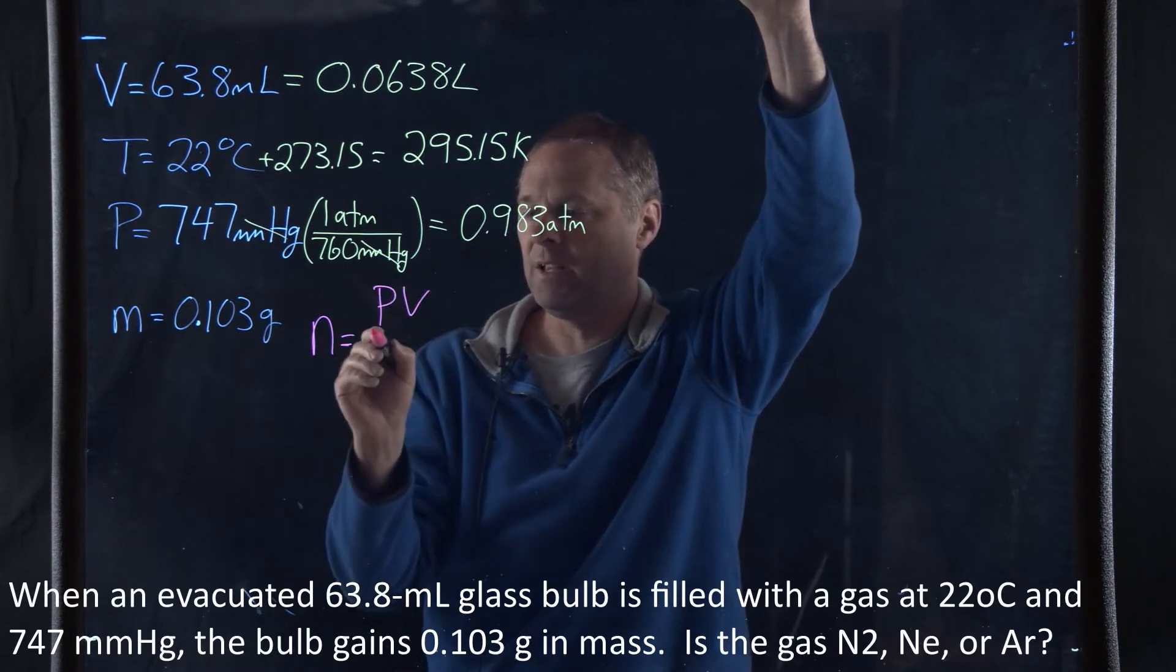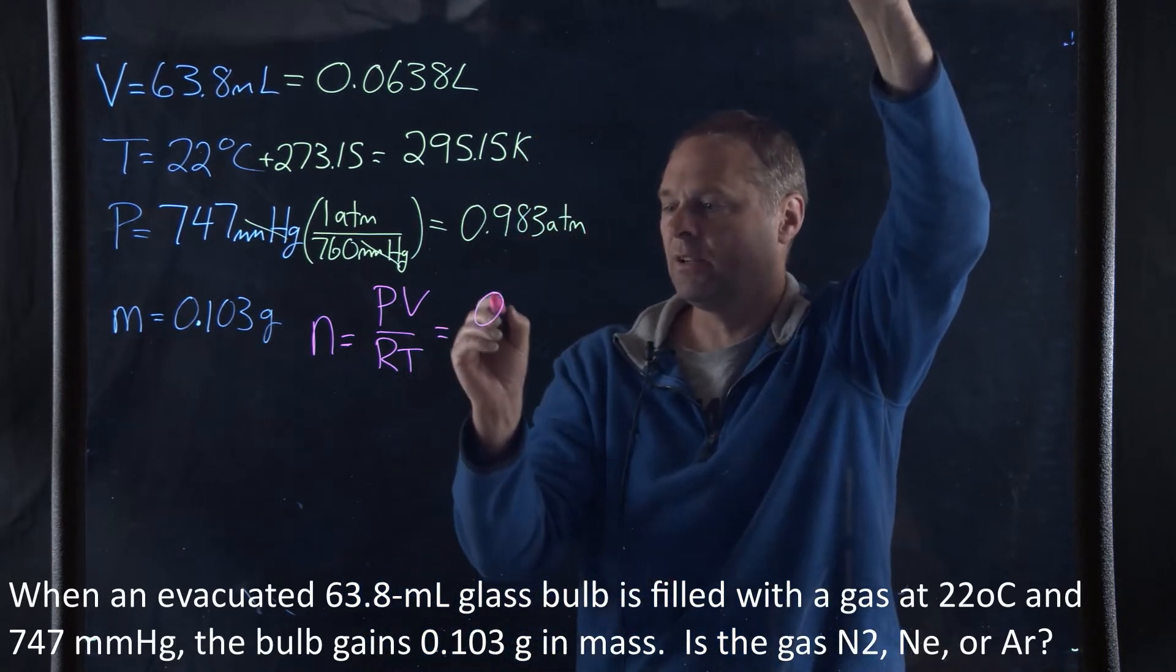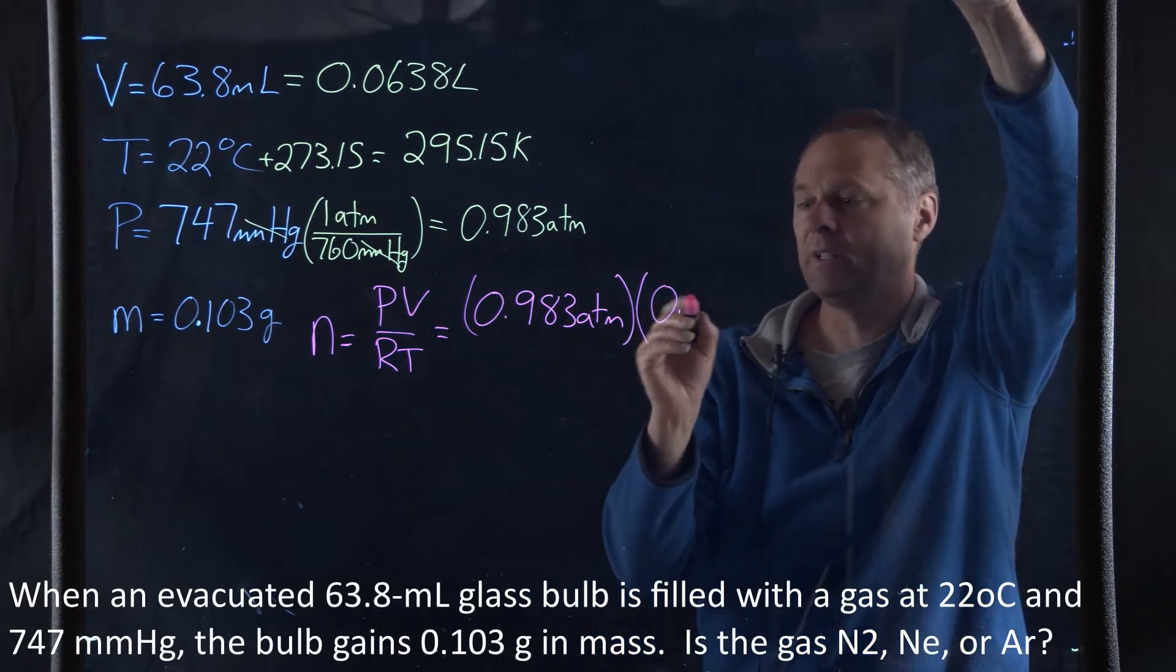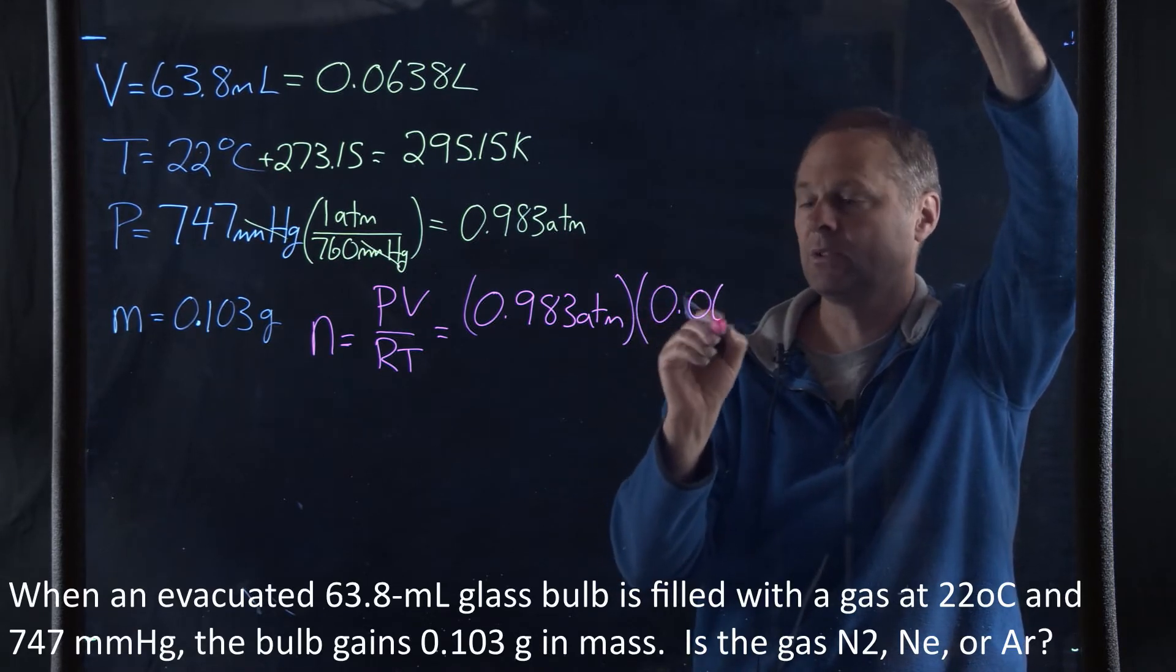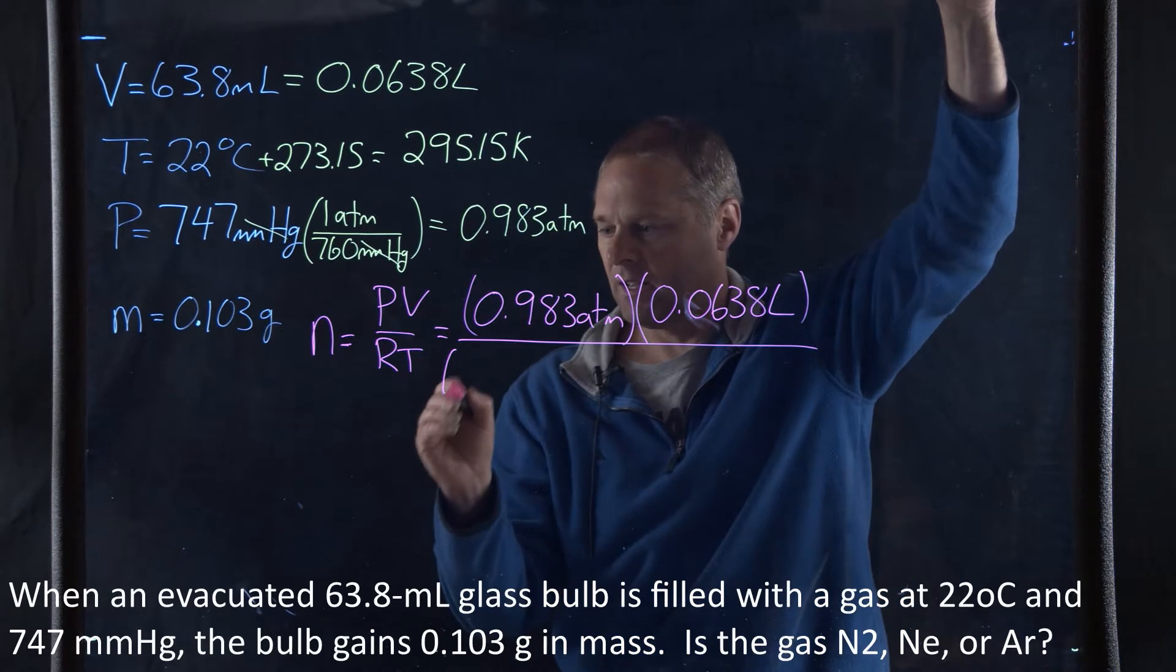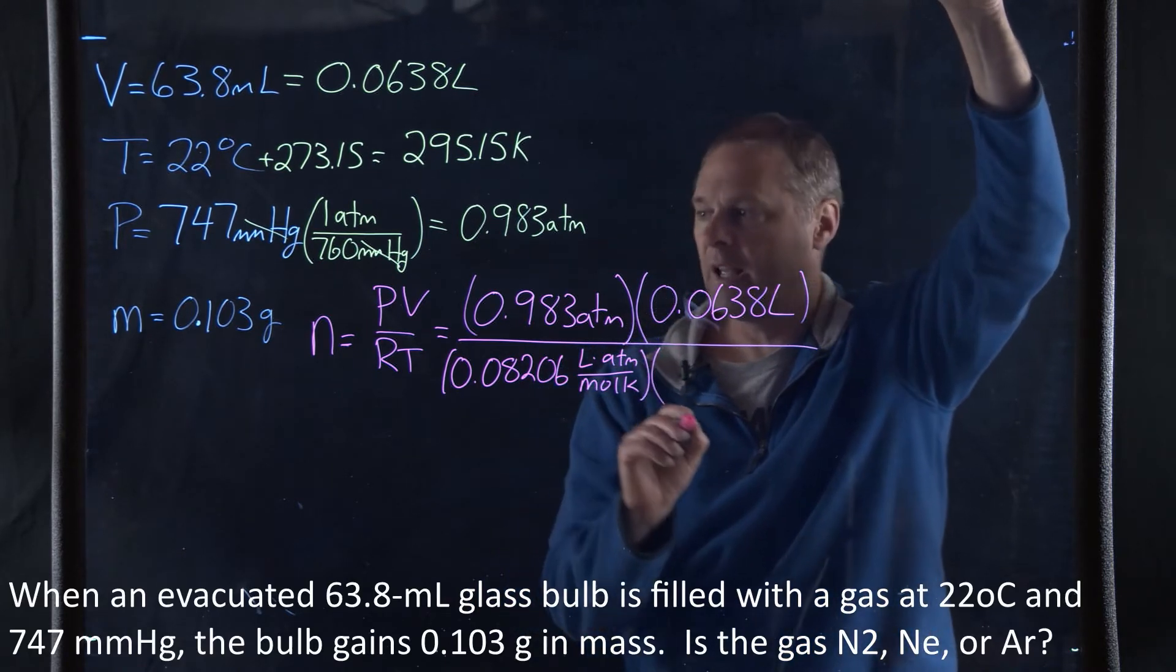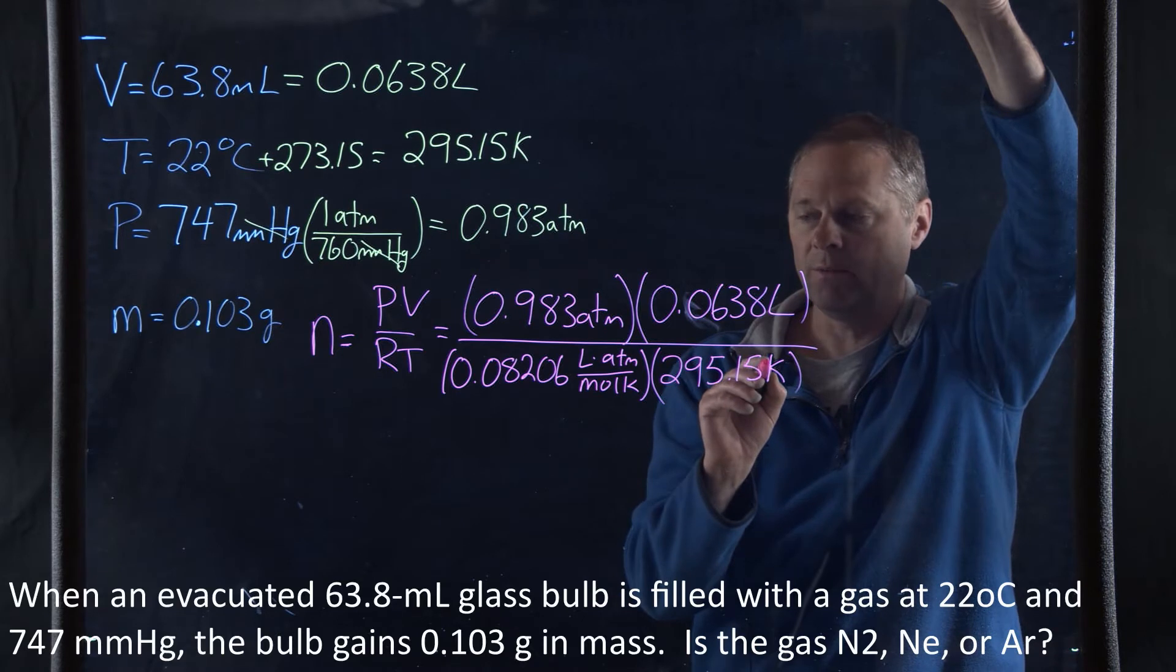So this is going to be PV all upon RT. Our pressure is 0.983 atmospheres. Our volume of the container is 0.0638 liters. Our R is 0.08206 liter atmosphere per mole Kelvin, and our temperature is 295.15 Kelvin.